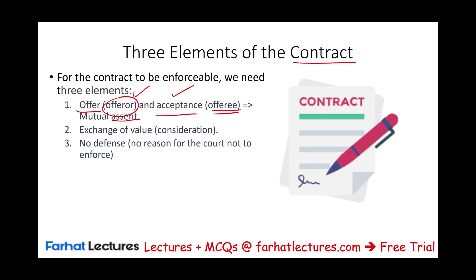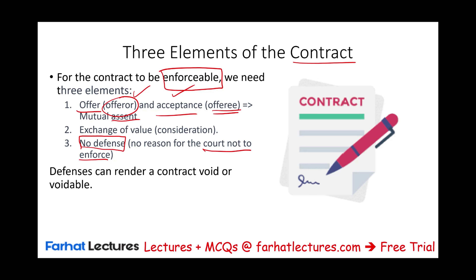In this session, we're going to be working on no defense for the contract. For a valid contract to exist, there should not be a reason for the court not to enforce this contract, because we are looking at an enforceable contract. If the contract is not enforceable, there's a defense — one party doesn't have to perform. The contract can be void or voidable, and we discussed those terms in the prior session.